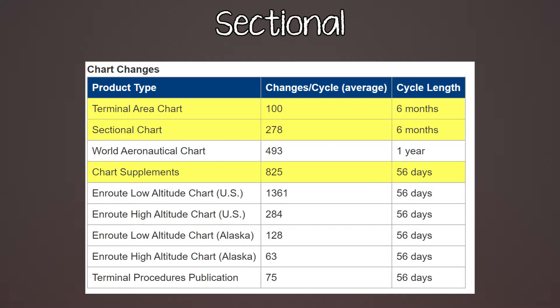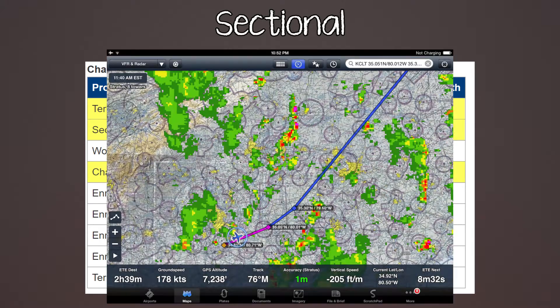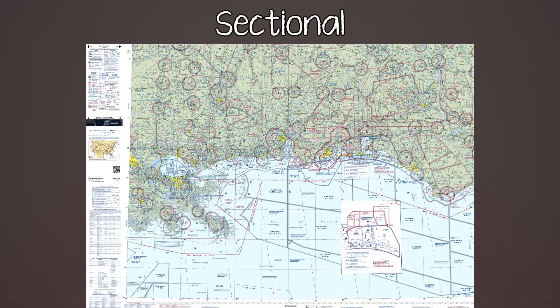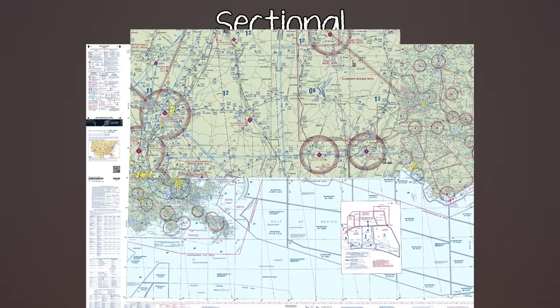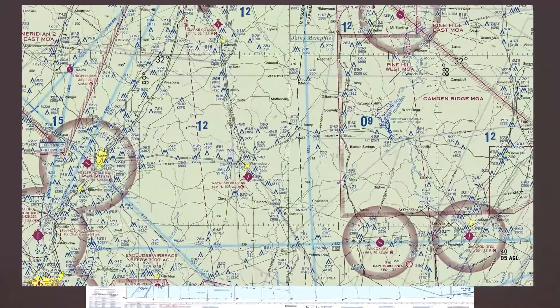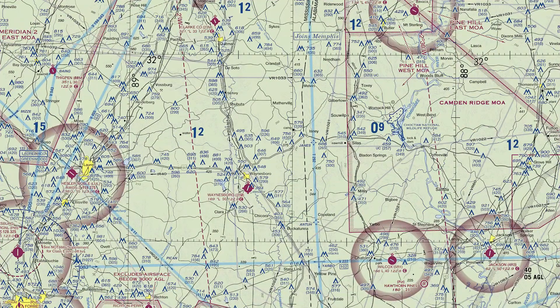You might be thinking: I have this fancy ForeFlight app and it updates everything automatically. You still need to check the NOTAMs — some of those things might not be on the chart. Now let's start with the basics. I've zoomed into the New Orleans chart.